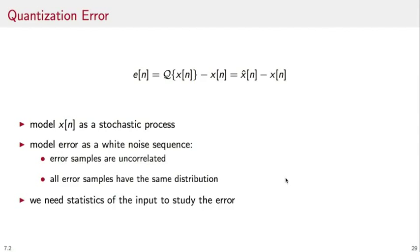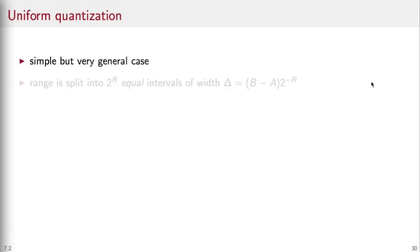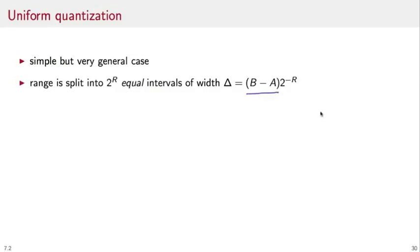In order to proceed further, we need the statistical description of the input samples. Let's also make some assumptions on the internal structure of the quantizer, and let's consider the simple but very common case of uniform quantization. The range, in this case, is split into 2 to the r equal intervals, with delta, which is equal to b minus a, the range of the input samples, divided by 2 to the r, the number of levels afforded by a rate of r bits per sample. So in the case of r equal to 2, as before, the range would be split into 4 equal width intervals.